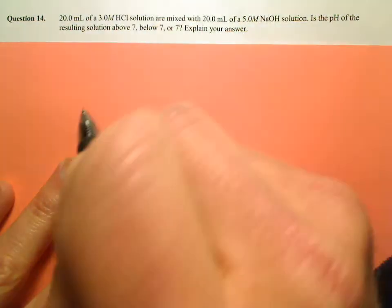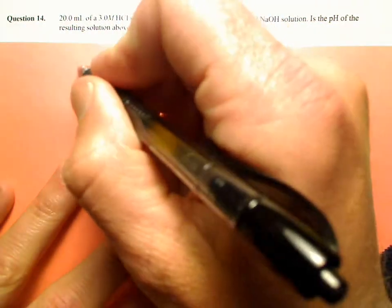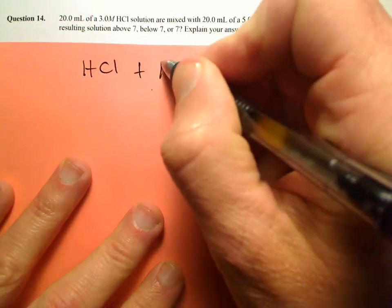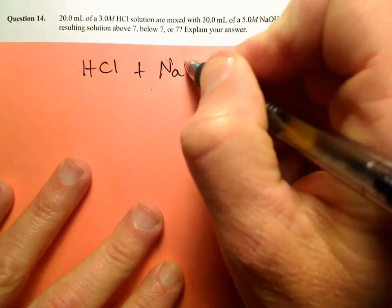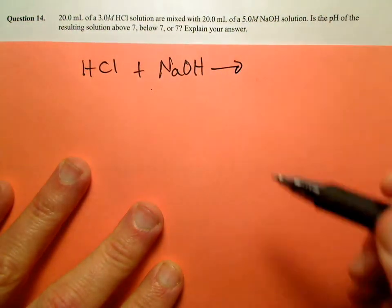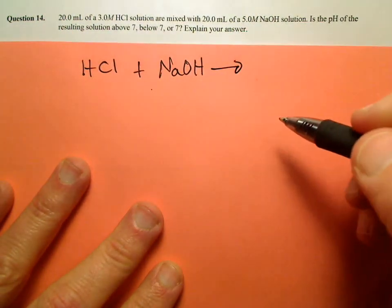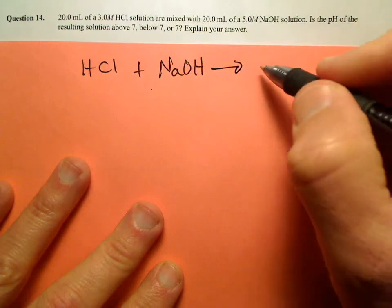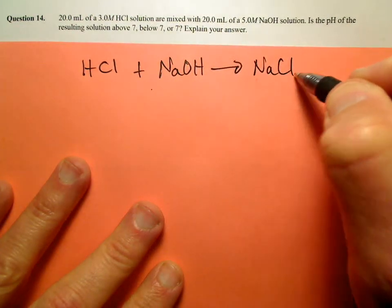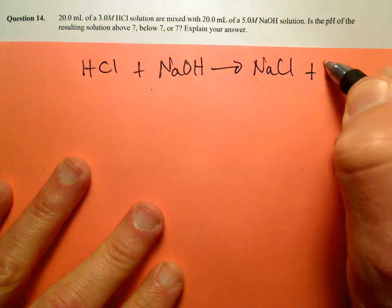First thing you need to know is the balanced equation, because there's a reaction that occurs. We know that HCl reacts with sodium hydroxide — and it forms the same thing it always does: sodium chloride and water.